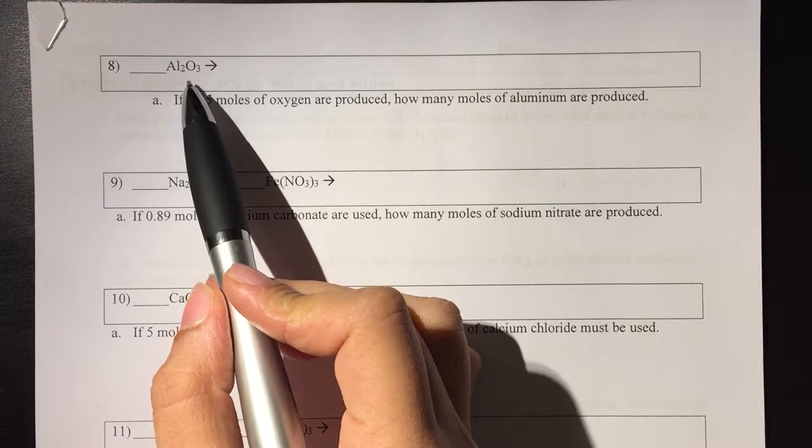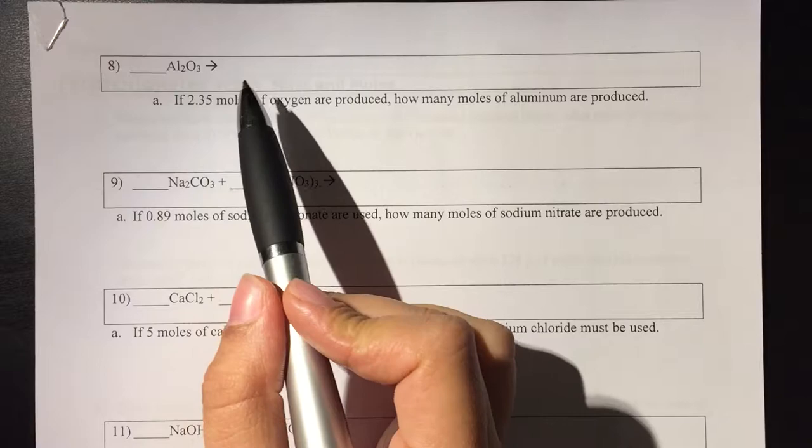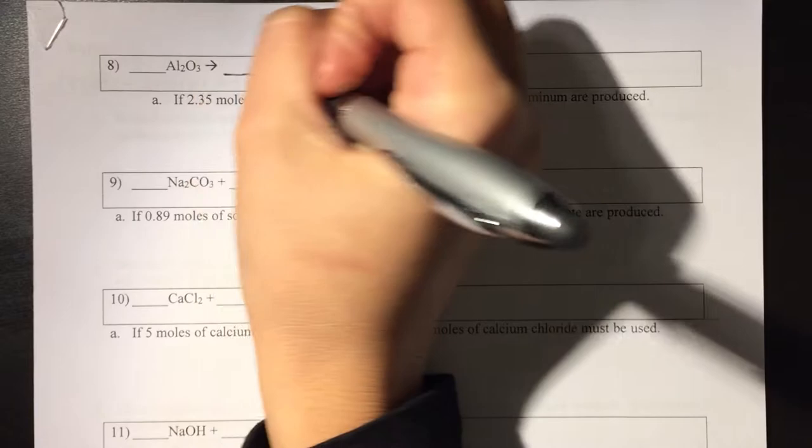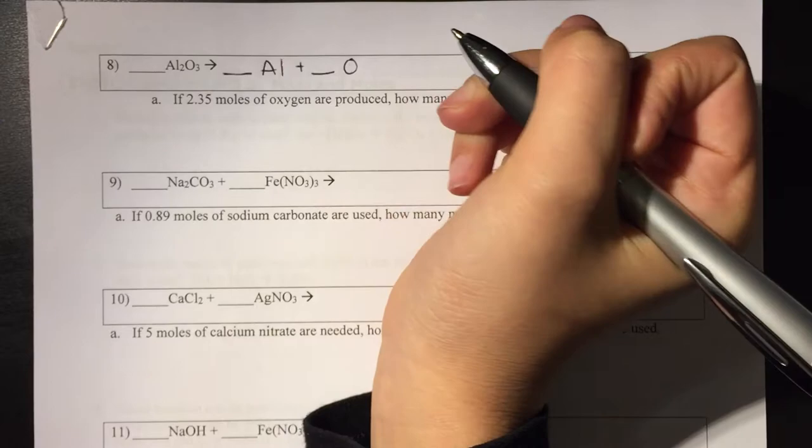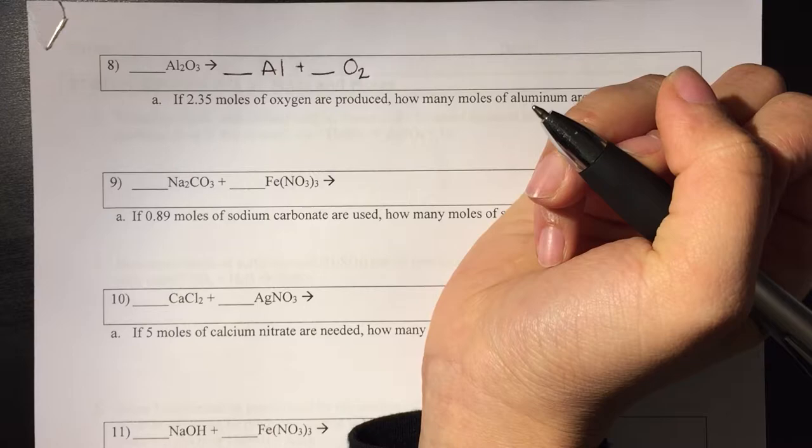We only have one reactant, so we know it's a decomposition. Aluminum oxide is going to split into its two pieces, which is aluminum and oxygen, but oxygen is one of the seven diatomic molecules, so we need to put a 2 next to it.